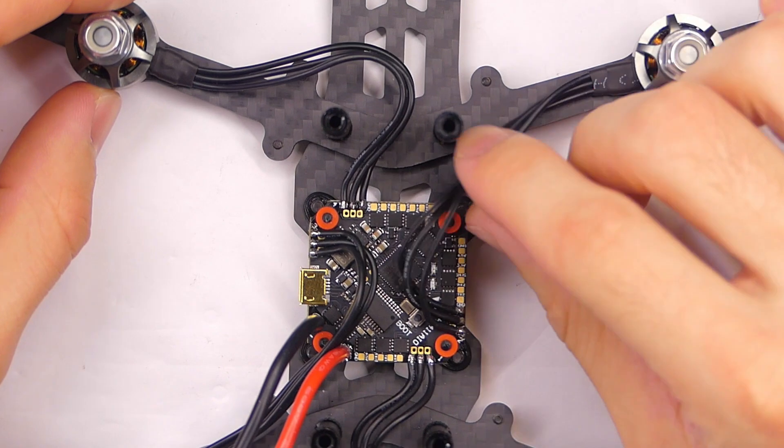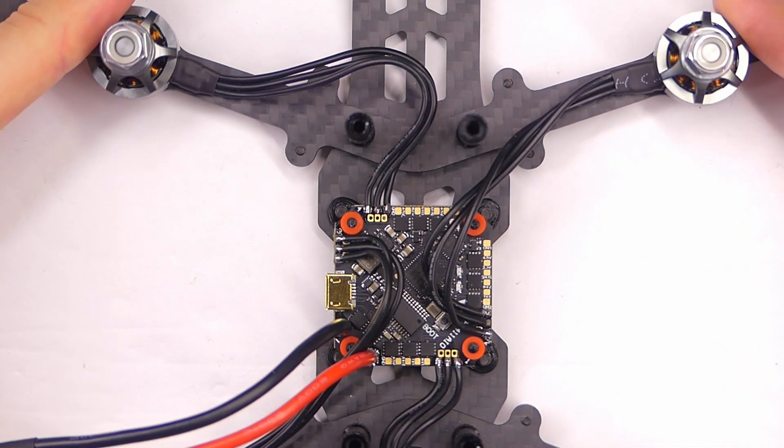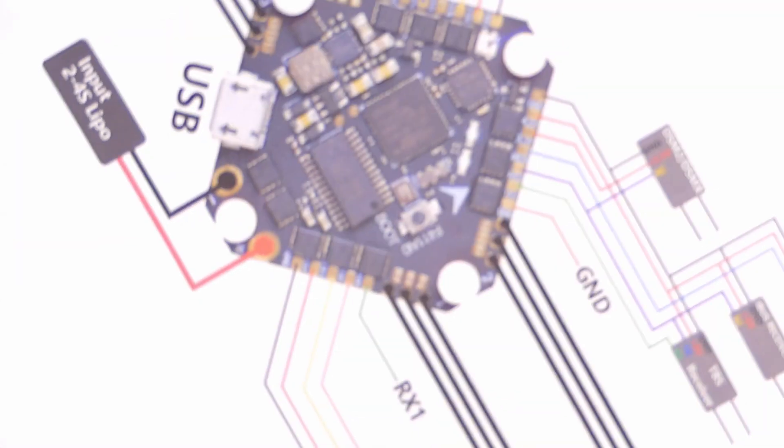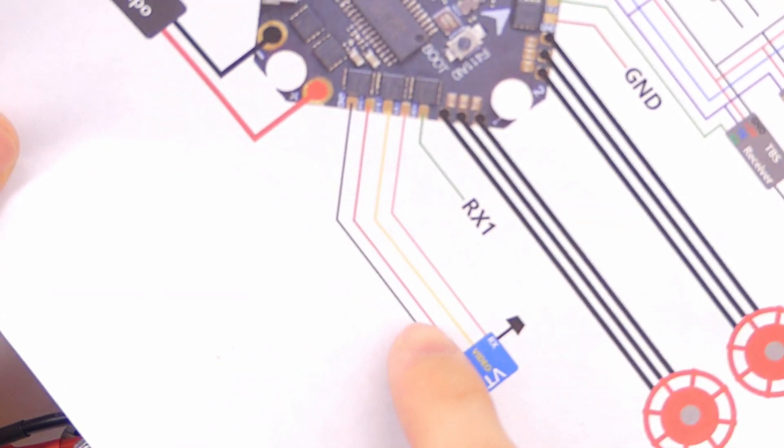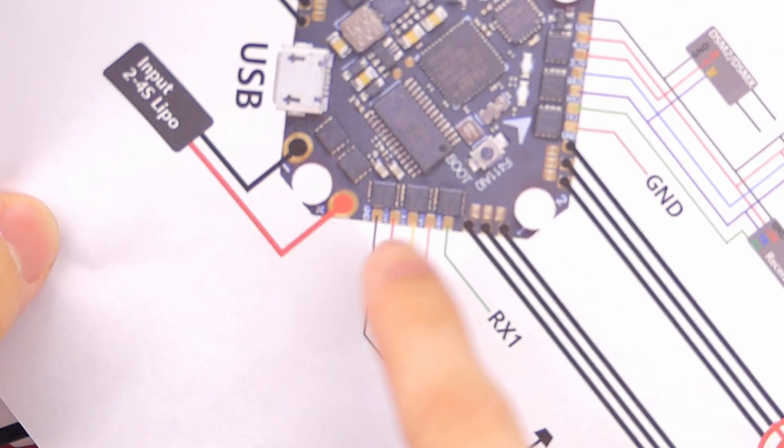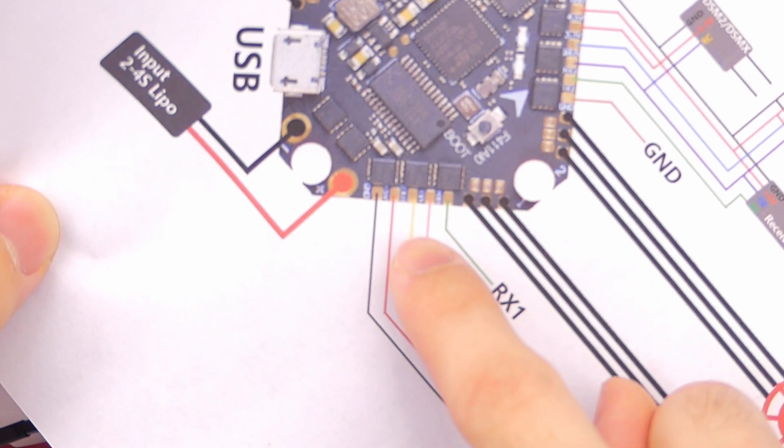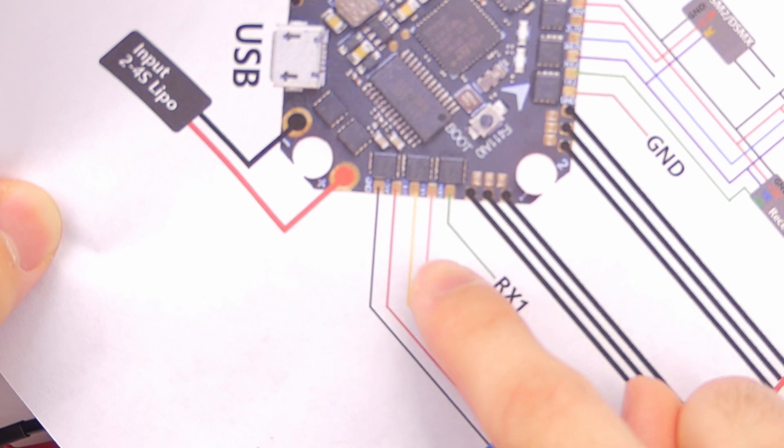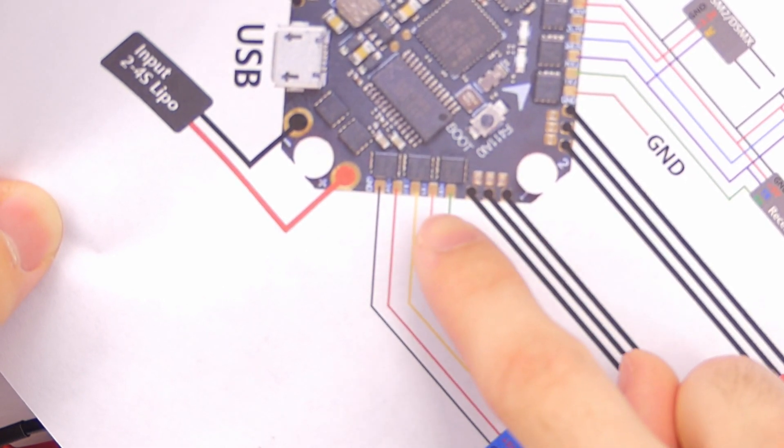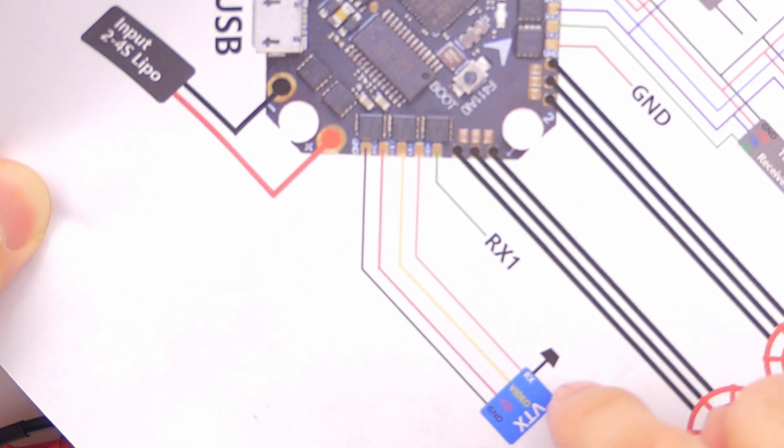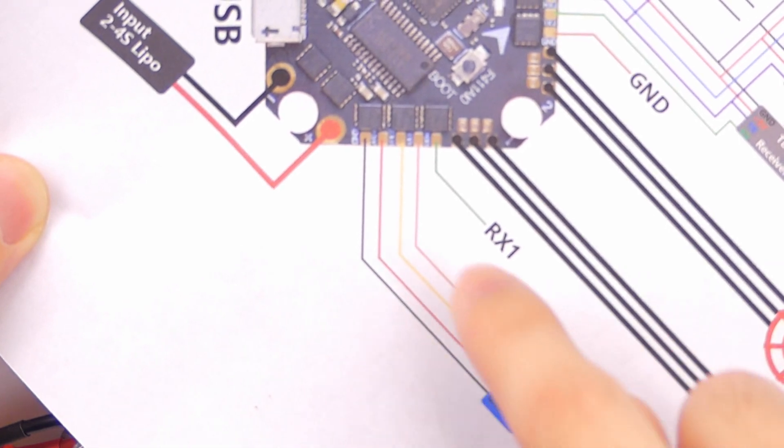Okay, so now that we have all the motors soldered, if we look at our diagram here, we can see that we can put our video transmitter on the back. It's going to be from left to right: ground, five volts in, video out. And we're going to connect up to TX1, which will connect to the RX or the smart audio port on the VTX. This should work in theory.